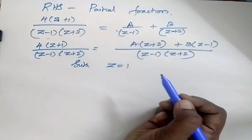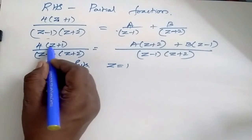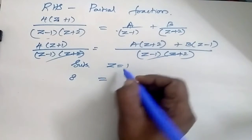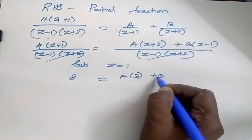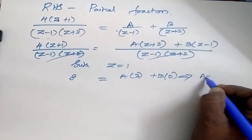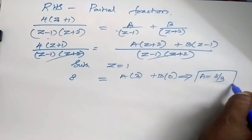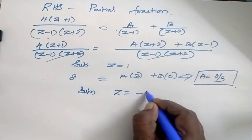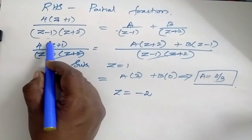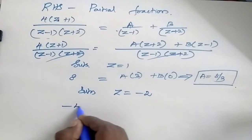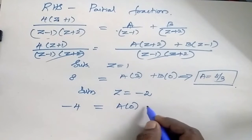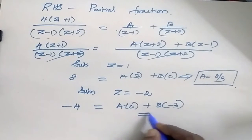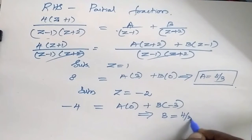Substitute z equals 1: 4 times (1+1) equals 8, and 8 equals A times 3 plus B times 0, which implies A equals 8/3. Now substitute z equals minus 2: 4 times (minus 2 plus 1) equals minus 4, which equals A times 0 plus B times (minus 3). This implies B equals 4/3.